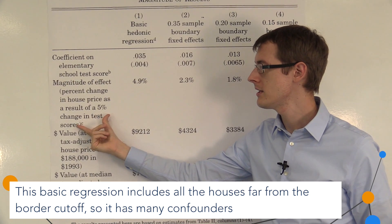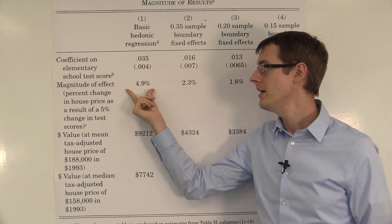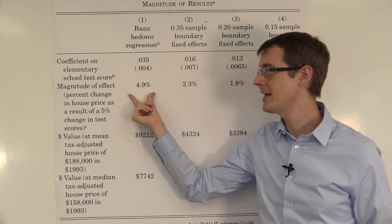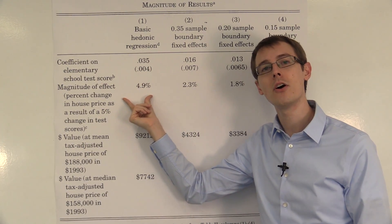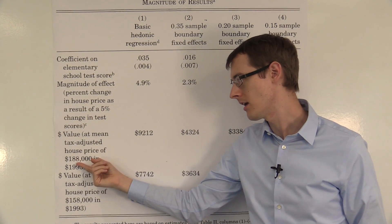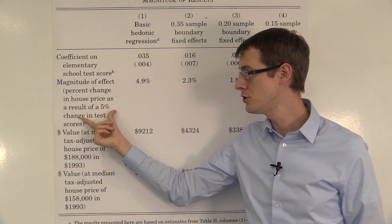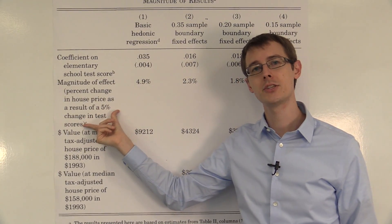Well, if we took test scores and increased them by 5%, then this estimate suggests that we get a 5% increase in our house price. Or if you took a house that was $188,000, it would get about a $9,000 increase in its value due to a 5% change in test score.